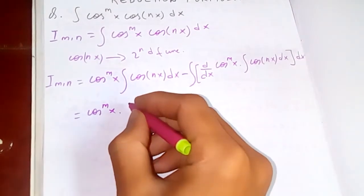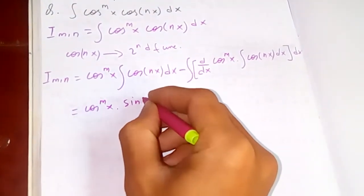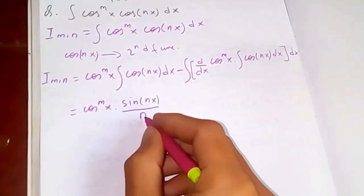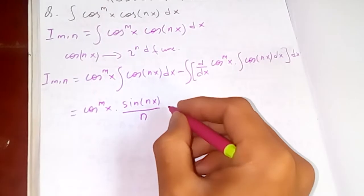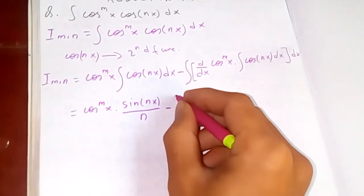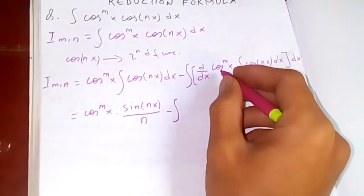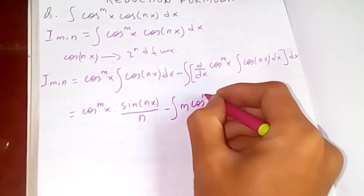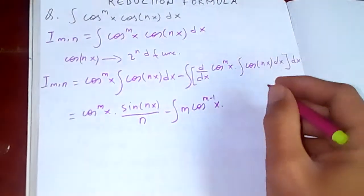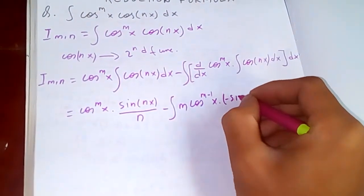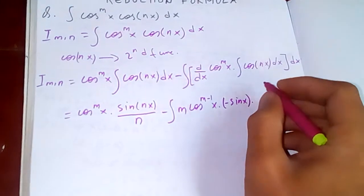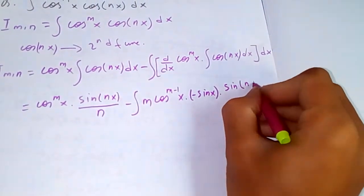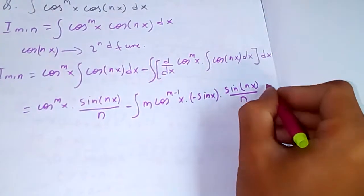Integration of cos(nx) is sin(nx)/n. So we write down: cos^m(x) · sin(nx)/n, minus integration of differentiation of cos^m(x). The differentiation of cos^m(x) gives m · cos^(m-1)(x) · (-sin x). And integration of cos(nx) is sin(nx)/n dx.